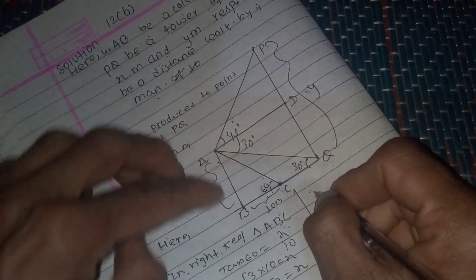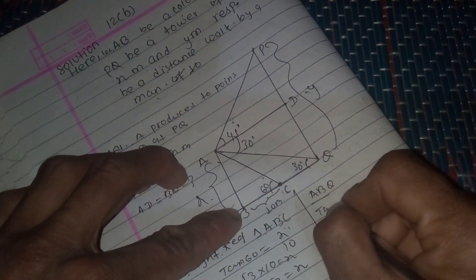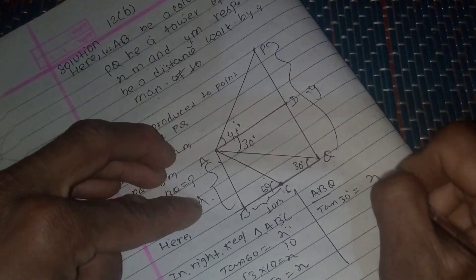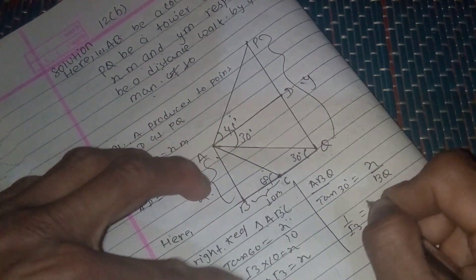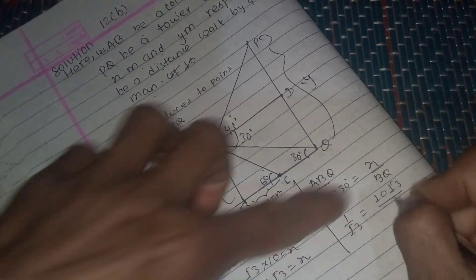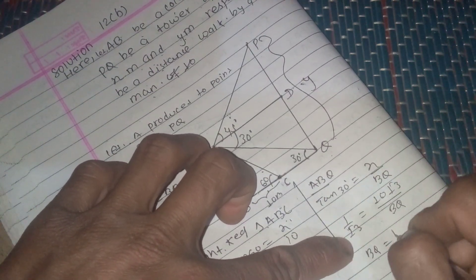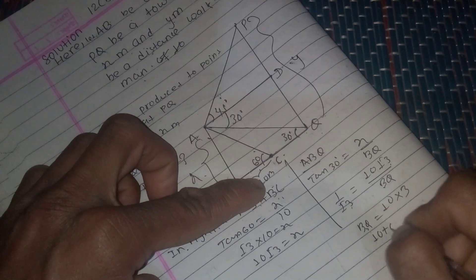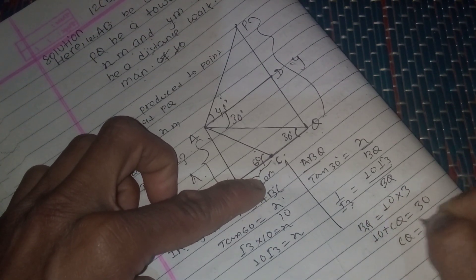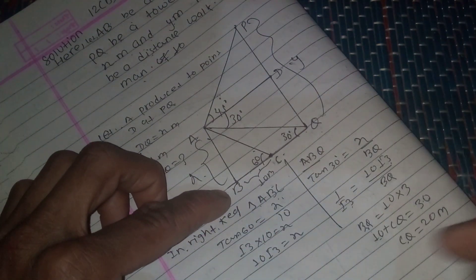In right angle triangle ABQ, using angle 30 degrees: tan 30 equals x divided by BQ, which equals 1 by root 3. With x equal to 10 root 3, BQ equals 10 root 3 divided by root 3 into root 3, giving BQ equals 30 meters. So CQ equals BQ minus BC equals 30 minus 10 equals 20 meters.